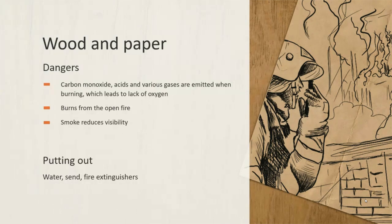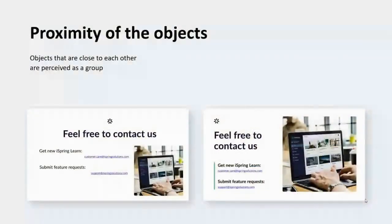The next rule is the proximity of objects. The main goal of the proximity rule is to group information logically so it becomes clear where each element belongs. When objects are next to each other, they are perceived as a whole. Let's look at our slide.